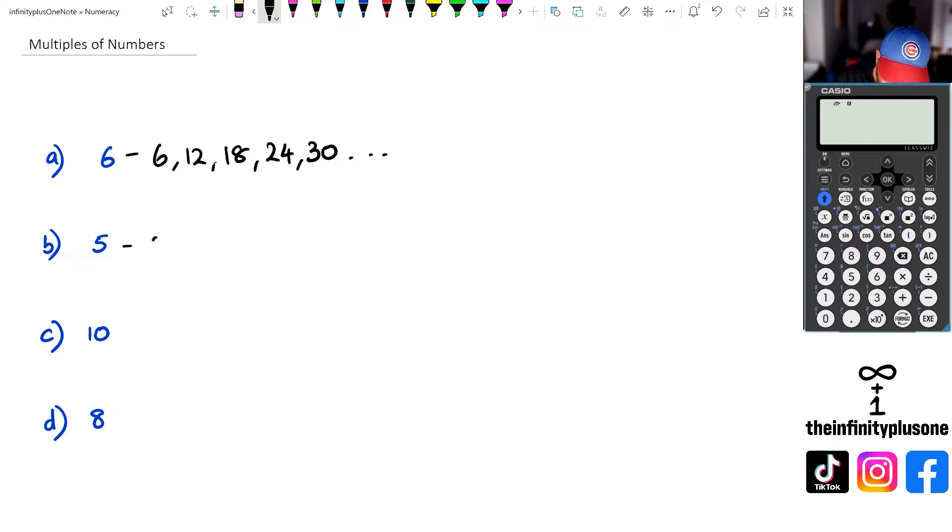So if you look at five, I'm going to get like 5, 10, 15, 20, 25, and so on.